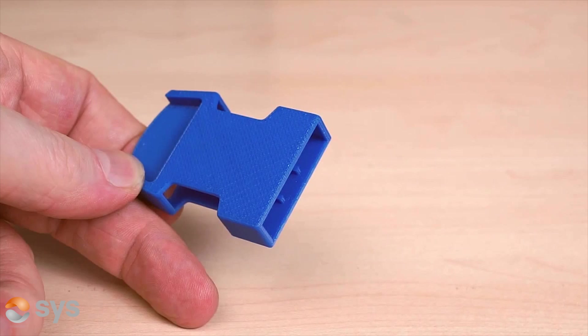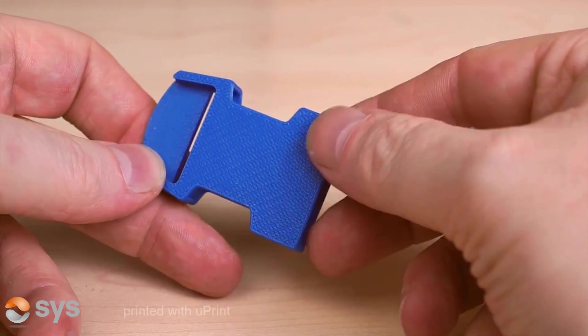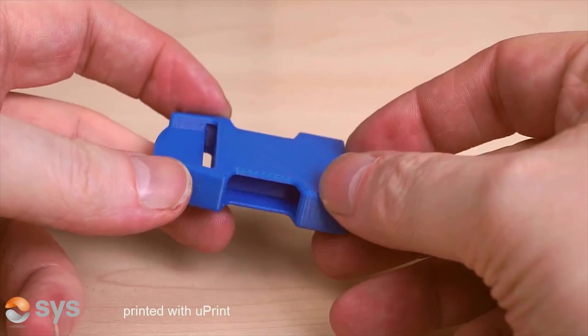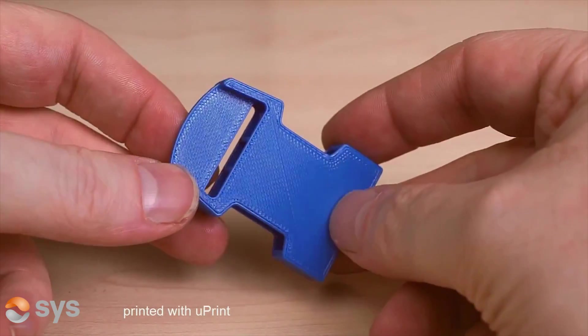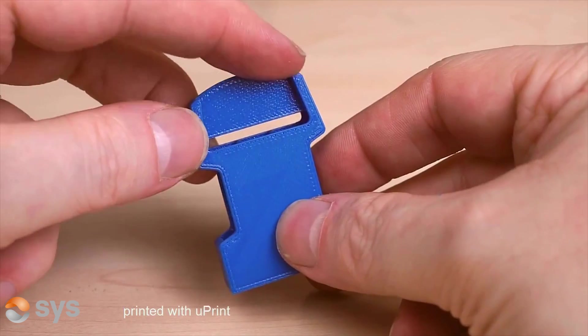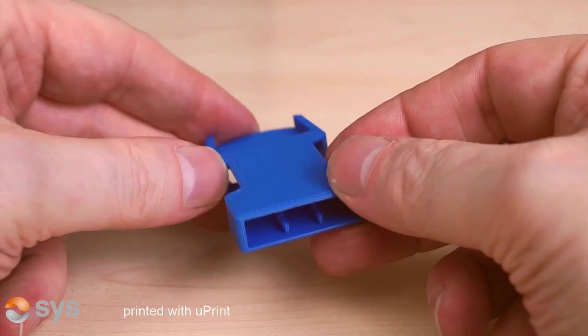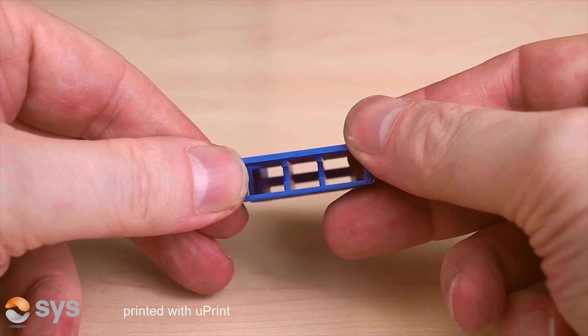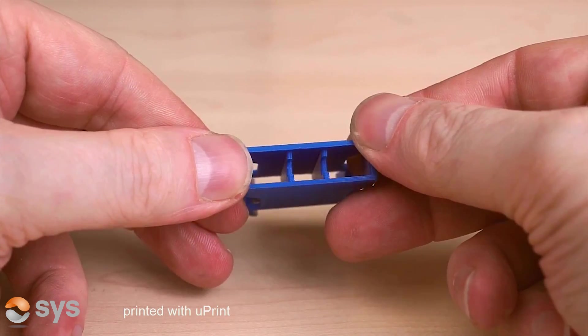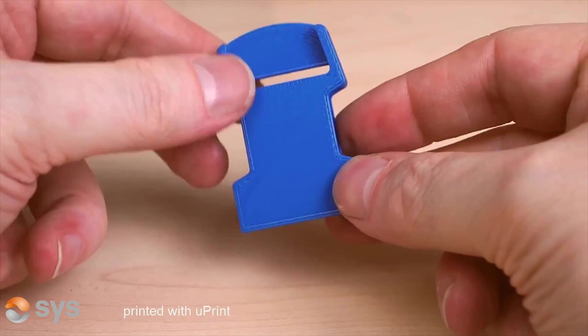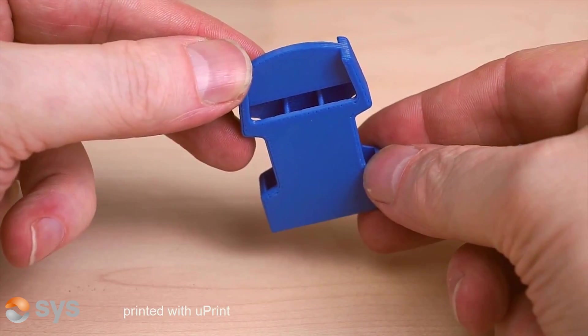In our tests, we were unable with the Cube Pro Trio to produce comparable quality as with the Uprint SE Plus, even when giving considerable attention to the orientation and experimenting with various print settings. In practice, there was too much time and effort to achieve any sort of usable models of the belt buckle from the test file we were using.